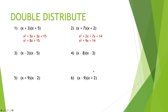Let's do a stop and start on number three. First I distribute x times x and x times negative five — that gets me x squared minus five x. Then I distribute the negative three. Notice how I'm peeking in front: negative three times x is negative three x, and negative three times negative five is positive fifteen. Combining the like terms in the middle gives me x squared minus eight x plus fifteen.